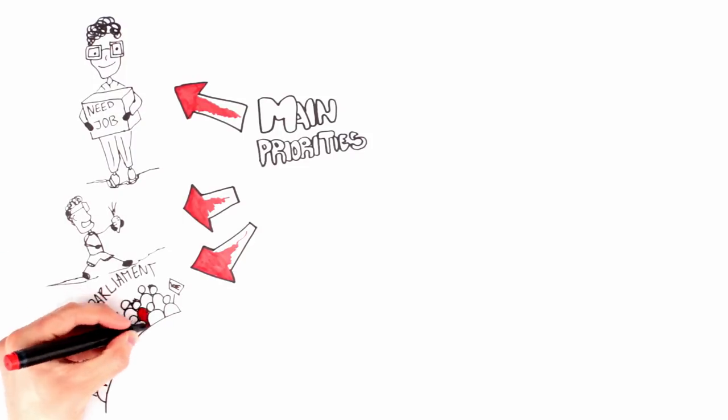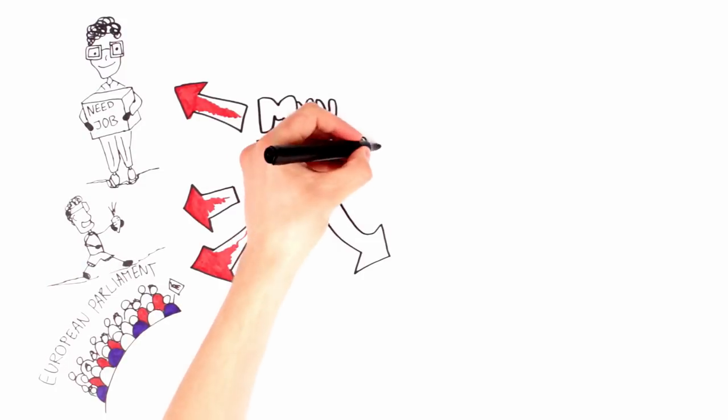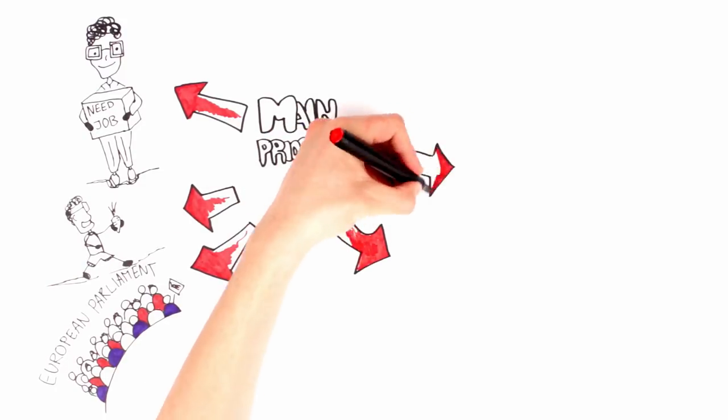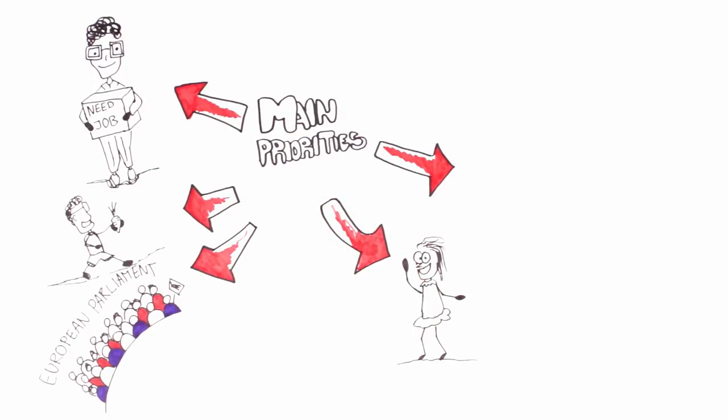It also wants to promote alternative forms of participation, not only voting, and working in creative ways with young people on important competences they need in life like languages, taking initiative and working with computers.